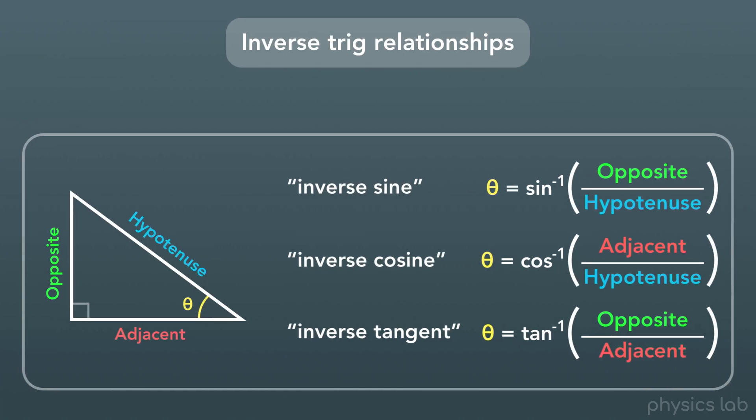These are inverse sine, inverse cosine, and inverse tangent. These three are really similar to the regular trig functions, except instead of plugging in an angle, we plug in the ratio of the two side lengths, and the function gives us the angle.